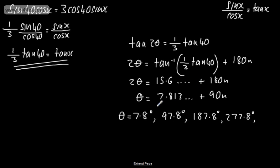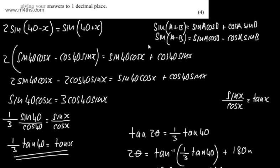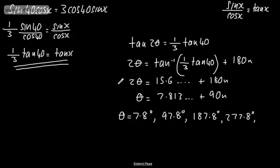So lots of different approaches here. 7.8, 97.8, they're just multiples of 90 on. Entirely up to you on how you want to solve, but this is what we should end up with. With that question, you can certainly approach this differently, but we should end up with these.